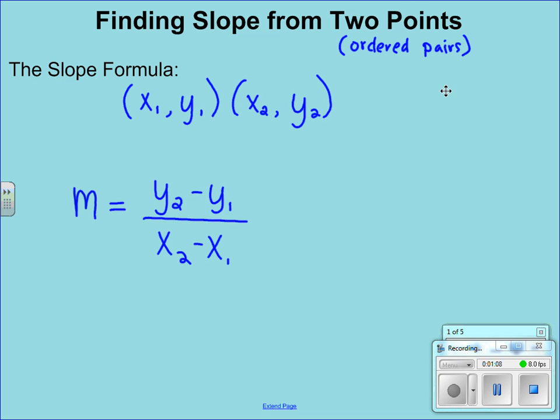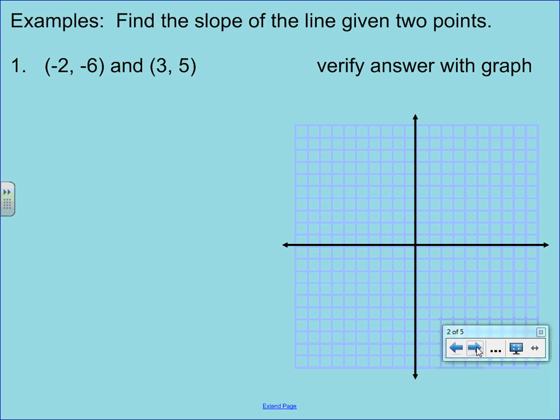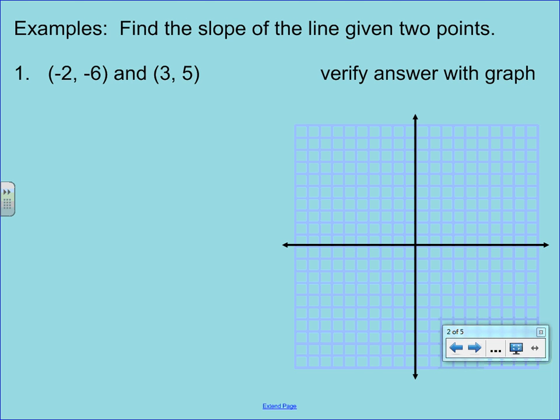Alright, let's practice this here. Our first example, we're given the two ordered pairs, and what I always want you to start with is labeling those two points. This will just help eliminate some of the mistakes of plugging things into the formula. So we start by just writing out the formula M equals. Now we want y2 minus y1, so that's going to be 5 minus a negative 6. So you're going to have a double negative. We'll fix that in a little bit, but for now just leave it like that.